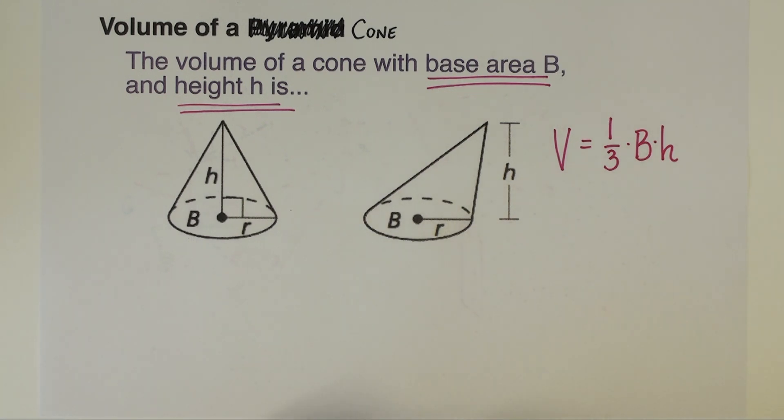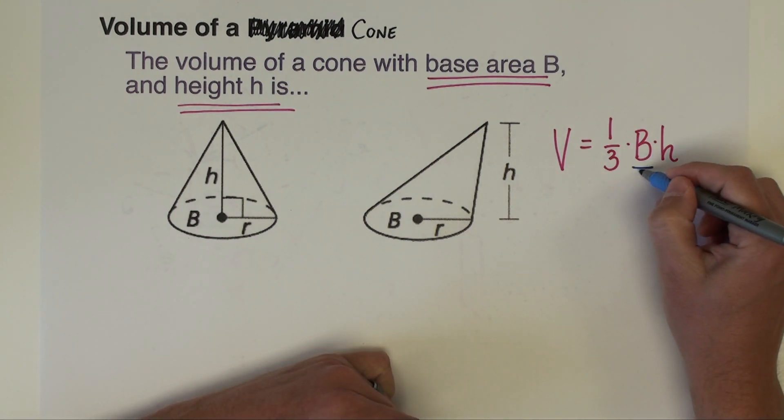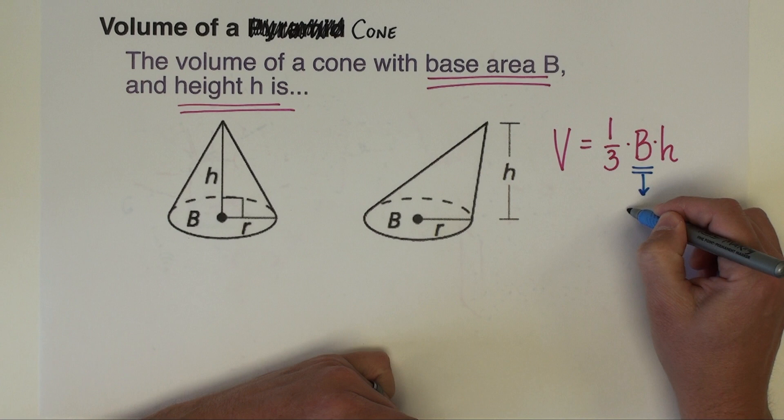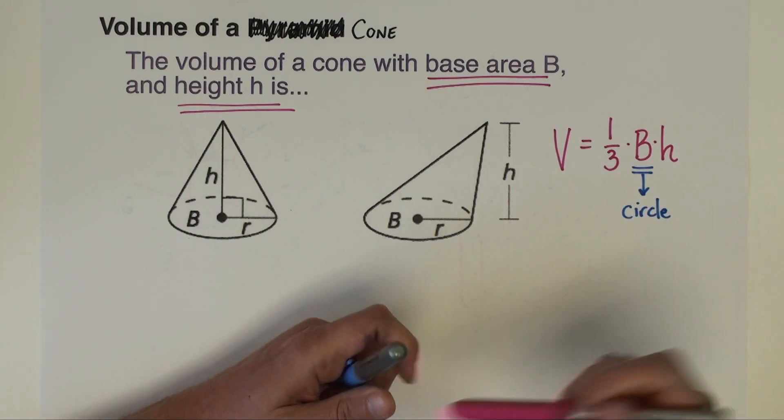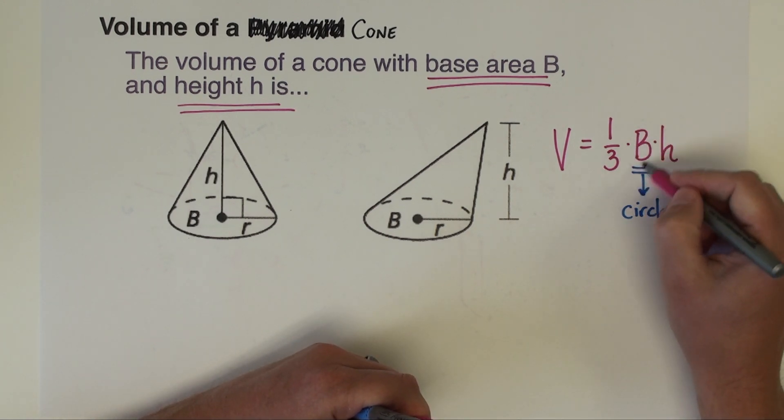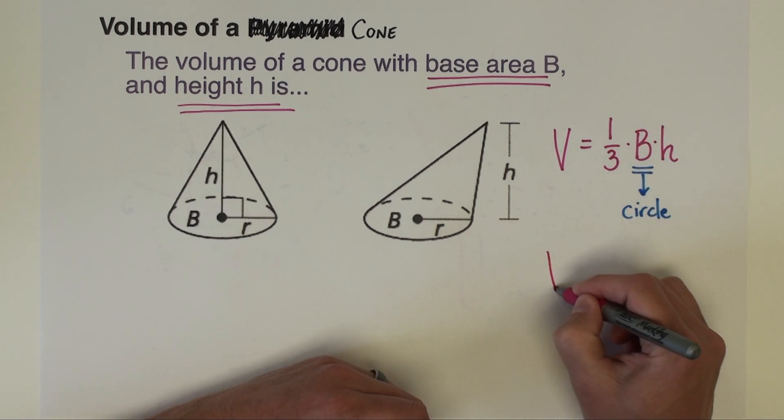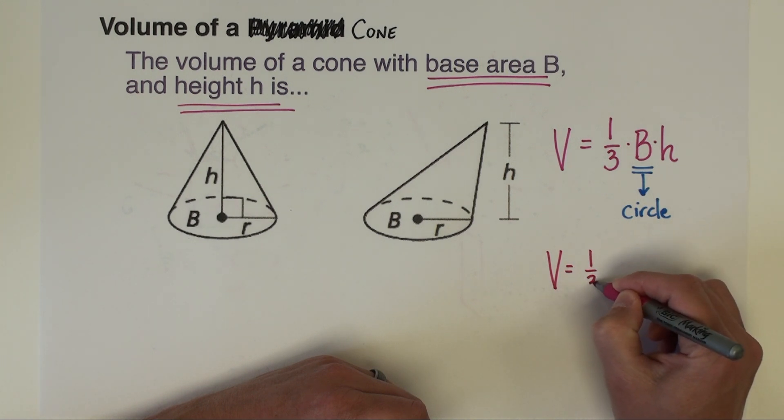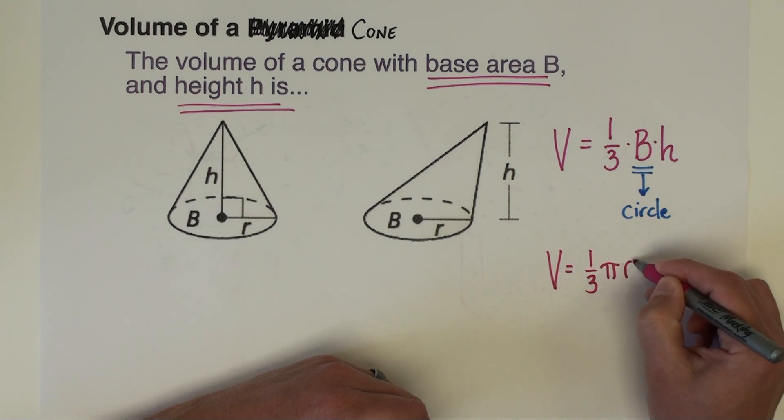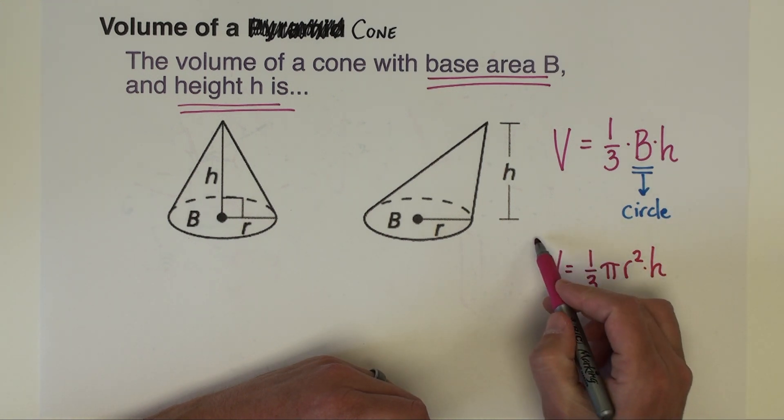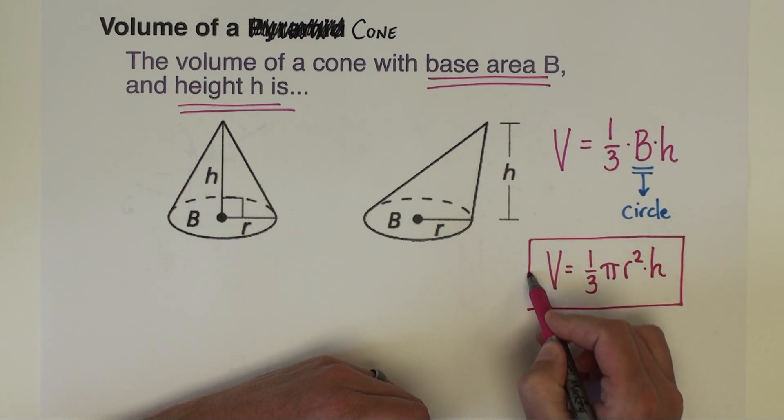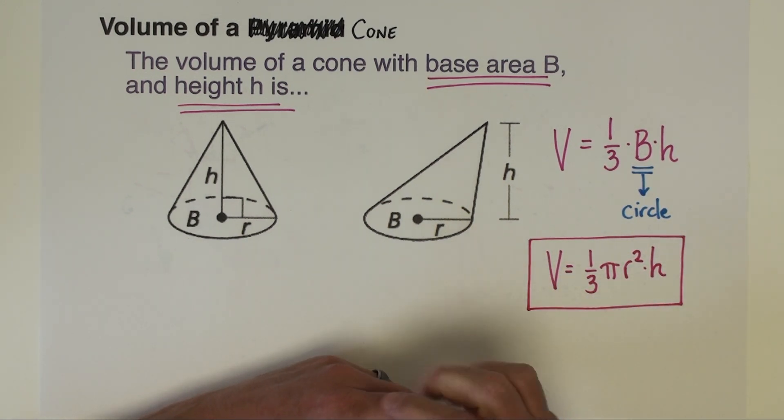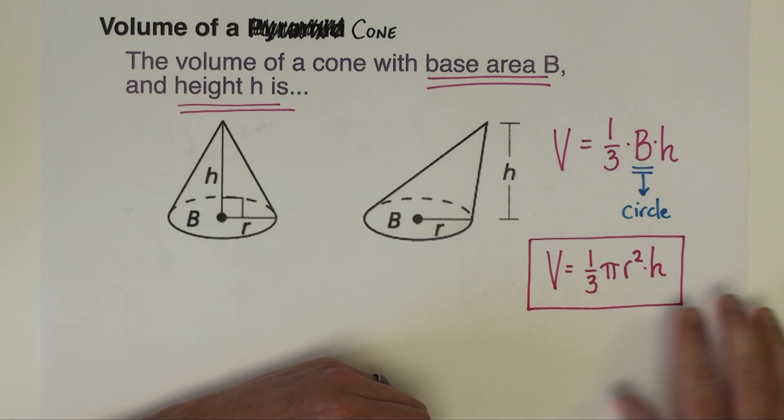If you remember what we did with cylinders, because the base shape of a cylinder and also for a cone is always going to be a circle, we're going to go ahead and rewrite and remove the base area part of that and just simply put in the area formula for a circle, which is pi r squared, and then keep that height right there. So this is the formula that we're going to use for cones. Let's take a look at a couple examples utilizing that formula.